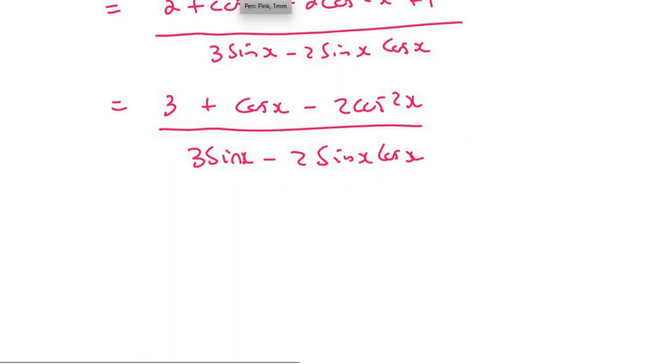Now it's time to factorize. Now at the top, we actually have a trinomial. Can you see it? We've got that part and that part and that part. So that is a trinomial. So I'm going to rearrange it to become minus 2 cos²x plus cosx plus 3 over 3 sinx minus 2 sinx cosx.